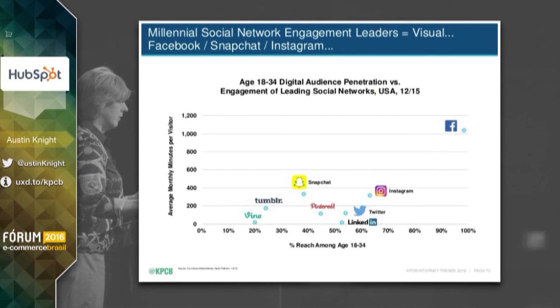We're also seeing that the social networks we engage with are changing. Going from left to right, we can see the penetration of each social network, and the higher they are, the more time users are spending on that network. Facebook is ridiculous — they have almost 100% penetration in the United States and by far take up all of our time, over a thousand minutes per month. Instagram has over 60% penetration and still takes up a pretty good amount of time. LinkedIn has over 50% penetration but takes up very little time. And Snapchat still has low penetration but is growing at a very fast rate, taking up over 350 minutes per month.